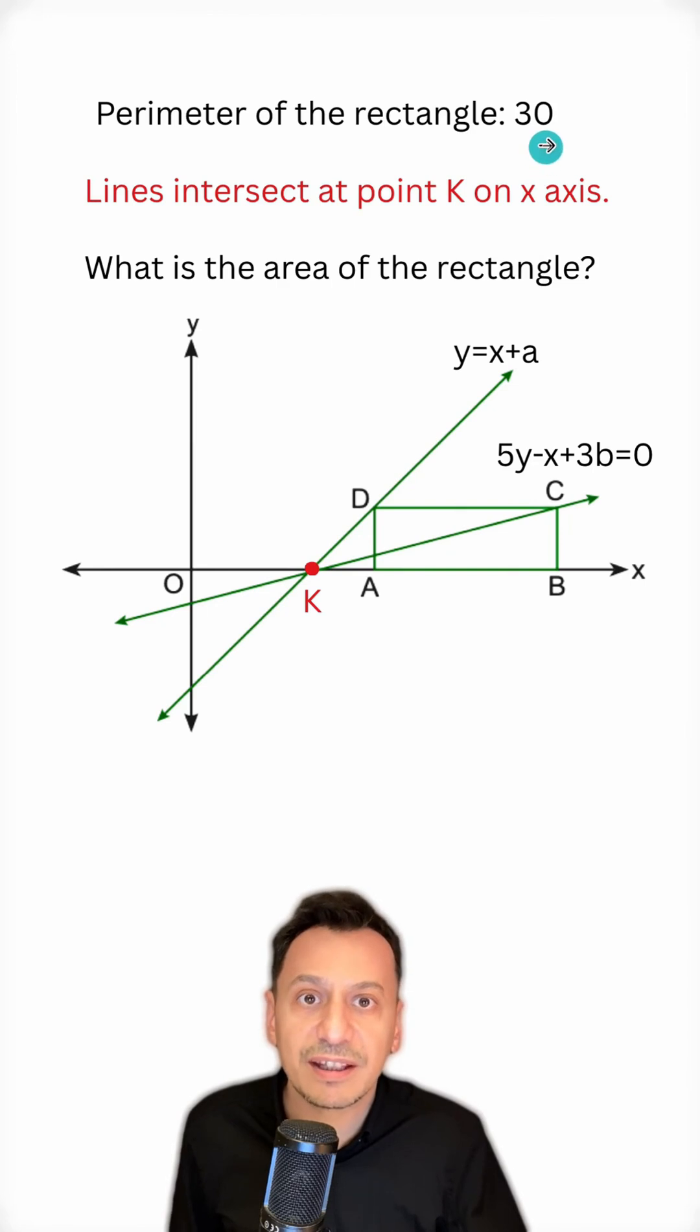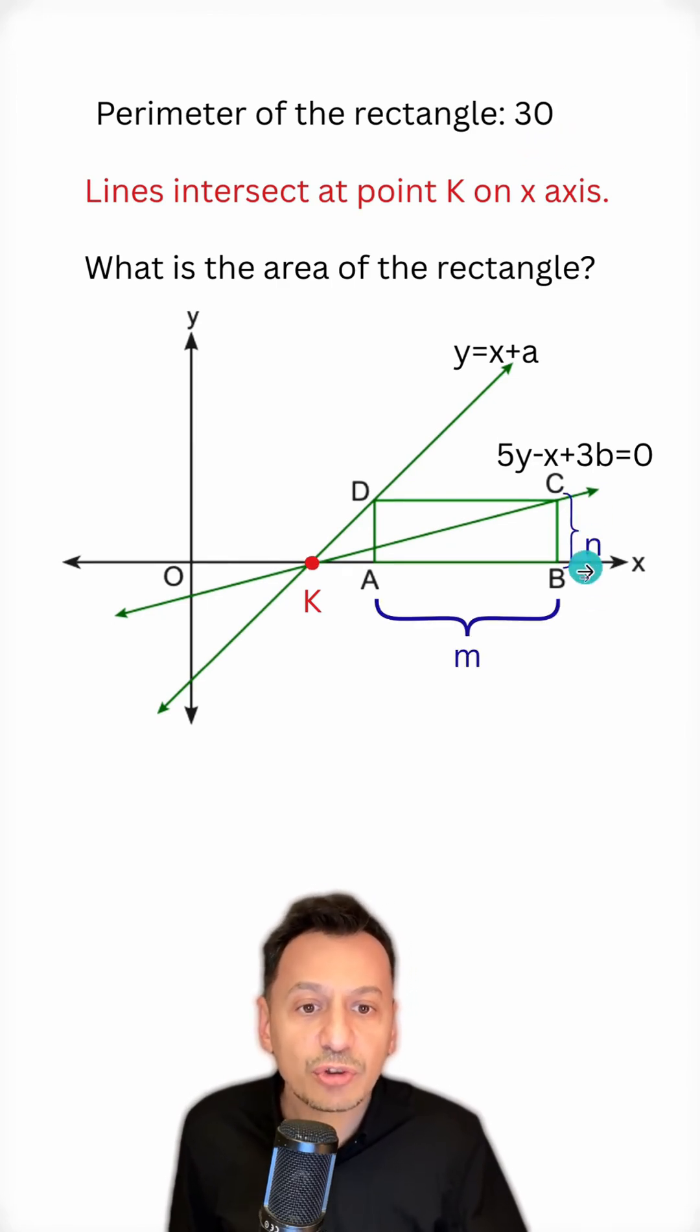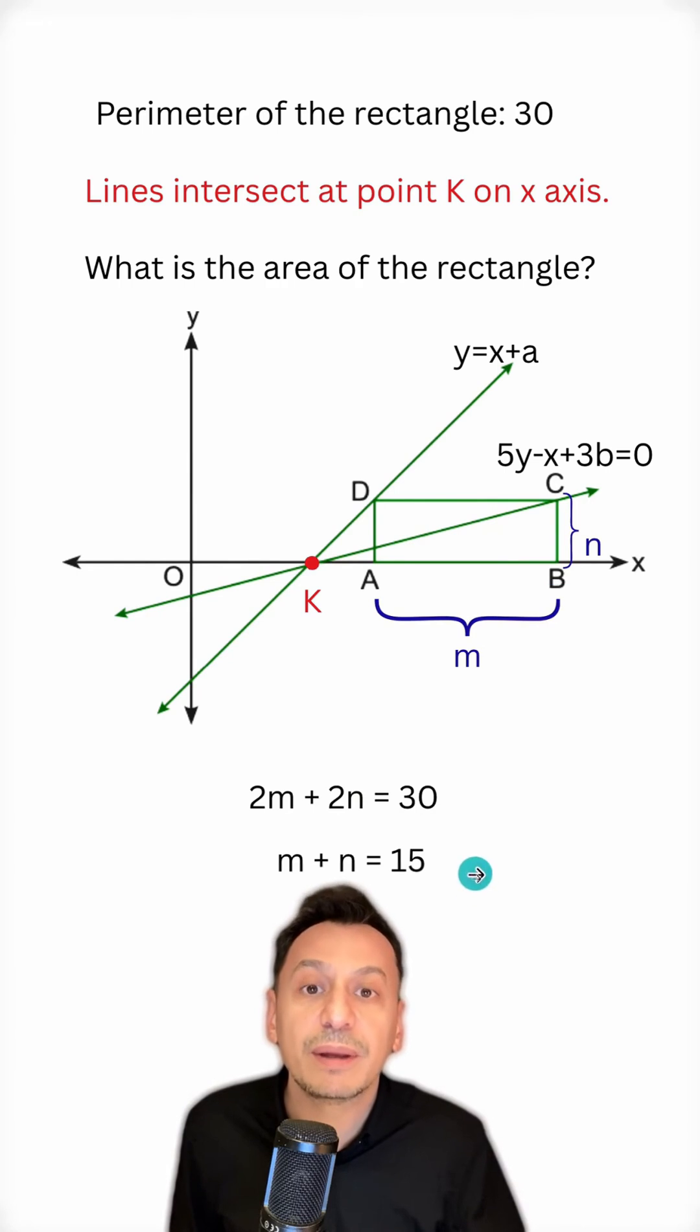Now I'm told that the perimeter of the rectangle is 30. Let's interpret this information. If I call the short side n and the long side m, then the perimeter of the rectangle will be 2m plus 2n. I set this equal to 30. From here, I can conclude the following. The sum of m and n will be equal to 15.